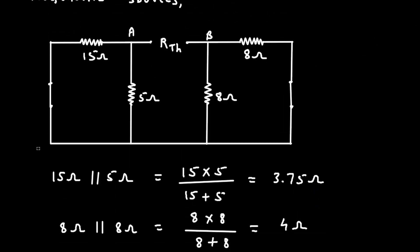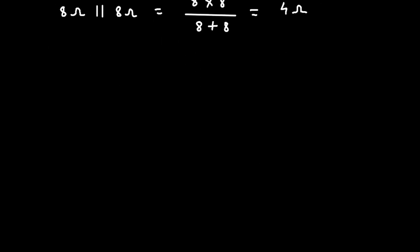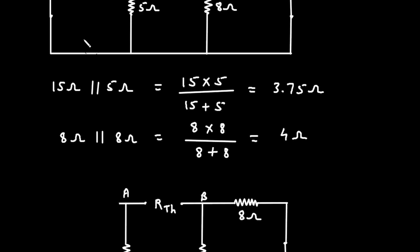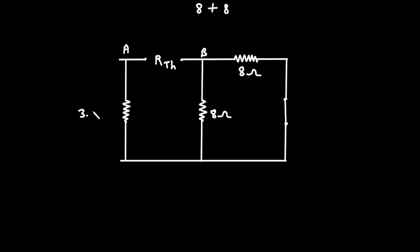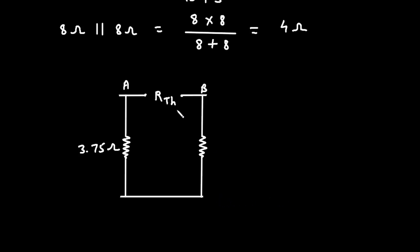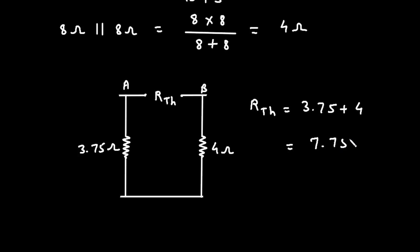We can redraw this circuit. We replace the 5 ohm and 15 ohm by a single resistance of 3.75 ohm, and we replace the two 8 ohm resistances by a single resistance of 4 ohm. Now, we can clearly see this 3.75 ohm is in series with 4 ohm. So, RTH is equal to 3.75 plus 4, which gives 7.75 ohm.